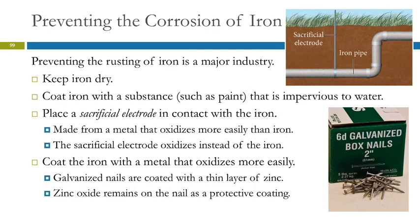How do you determine what to use as a sacrificial electrode? You look at anything that has a reduction potential — since it's being oxidized, we want the oxidation potential to be lower than that of iron. So that metal will be oxidized first. Once that's all gone, then it'll go on and oxidize the iron.